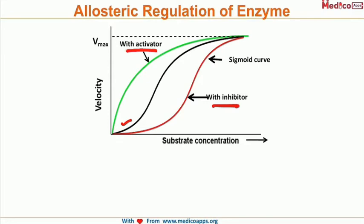A few important things to note: first, Vmax does not change. With activator, with inhibitor, or without activator or inhibitor, the maximum velocity will always be the same. If we keep increasing substrate concentration, the effect of the activator or inhibitor is lost. Vmax is the same in all three cases.